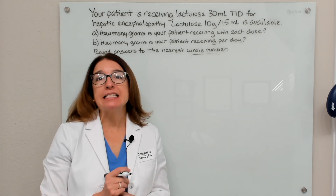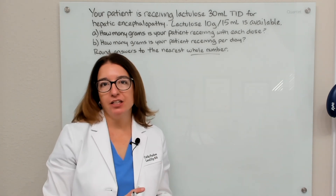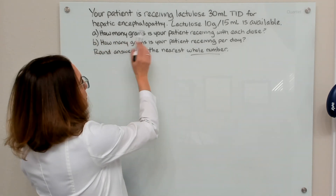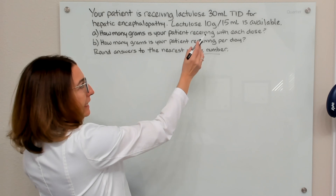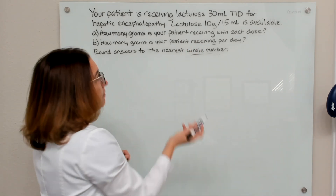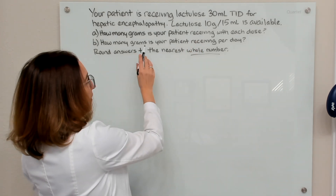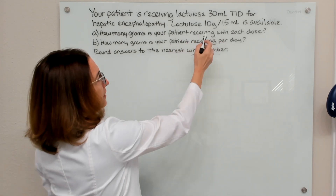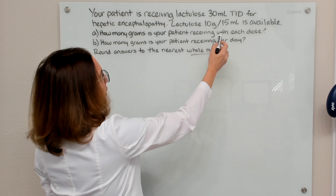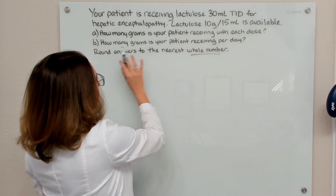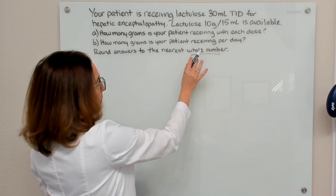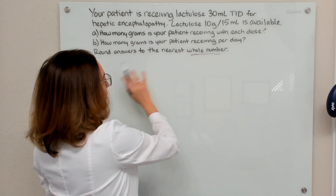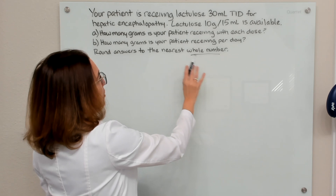Let's now work through a second liquid medication example problem. In this problem, our patient is receiving Lactulose 30 milliliters TID — three times a day — for hepatic encephalopathy. Lactulose 10 grams in 15 milliliters is available as our medication concentration. We're asked: how many grams is the patient receiving with each dose, and how many grams per day? Round all answers to the nearest whole number.